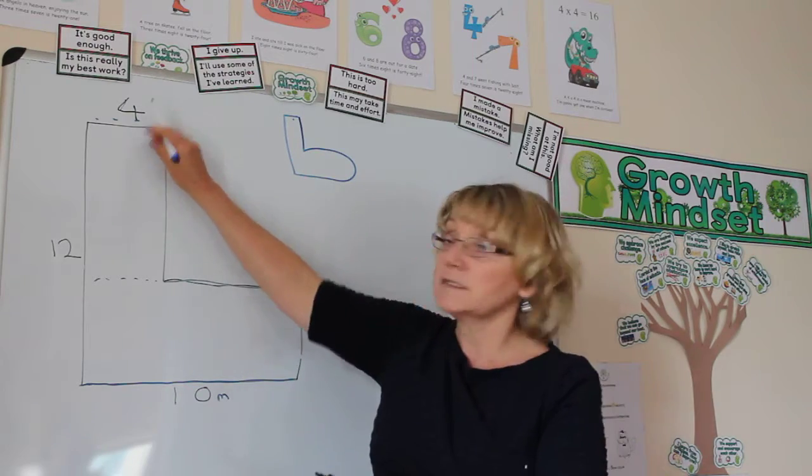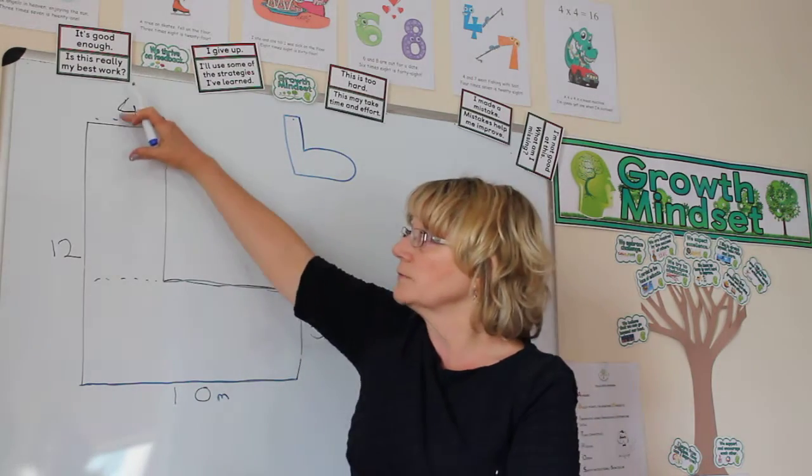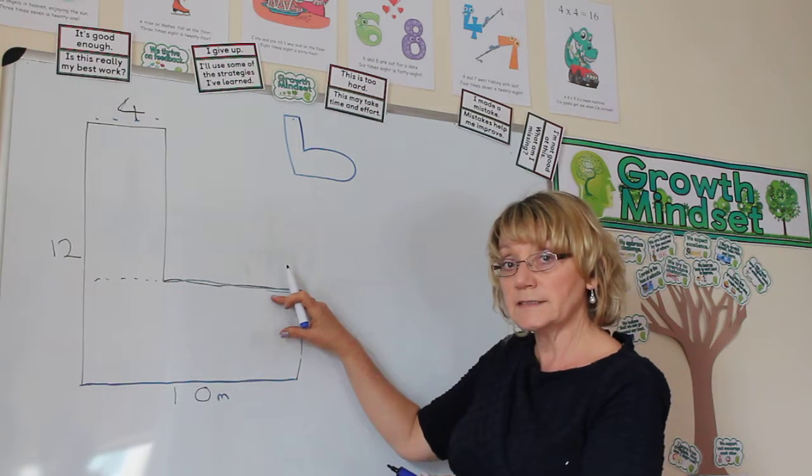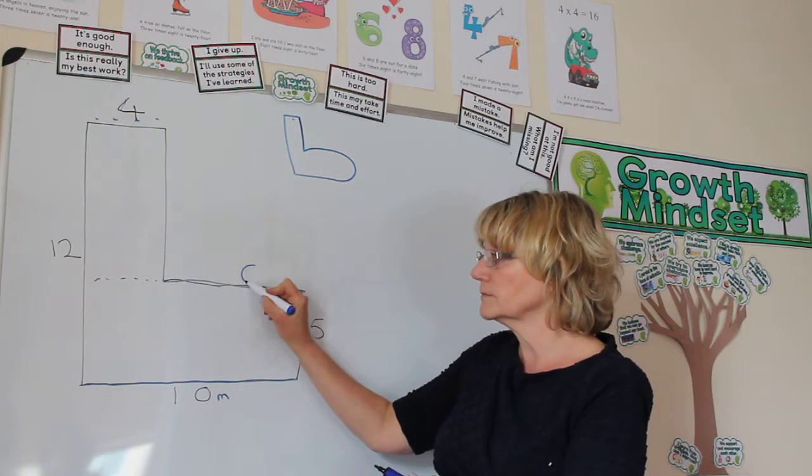We know that this bit is 4 because it's just been pushed back there, so if we pulled that down that would be 4. This side then, 4 plus what makes 10? It's 6, so that's a 6.